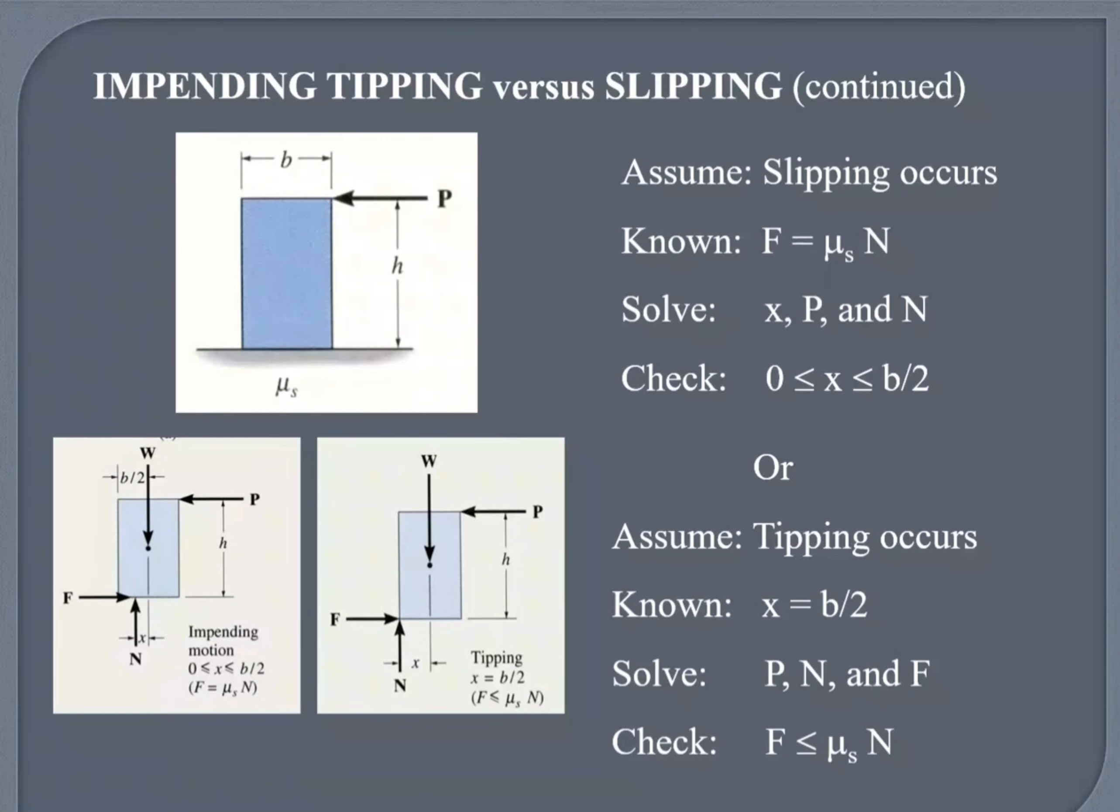Impending tipping is the moment of tipping, just the moment of the tipping. Impending slipping is just the verge of slipping. So there's always two scenarios. Either the object will slip or it will tip. So when it will slip and when it will tip.